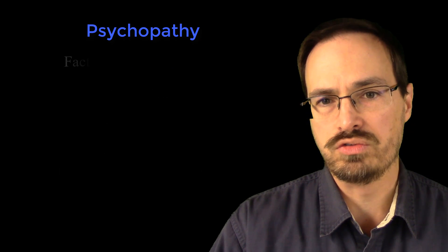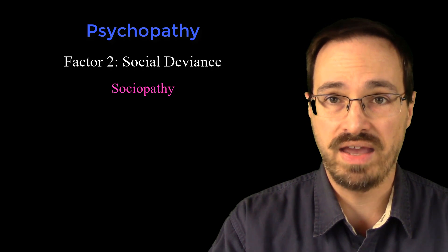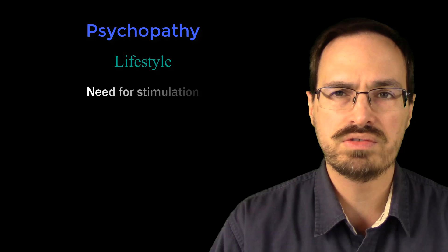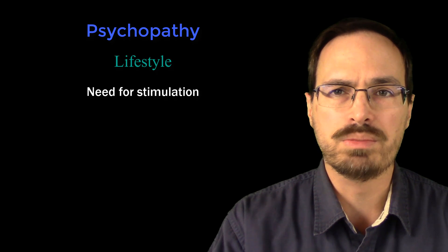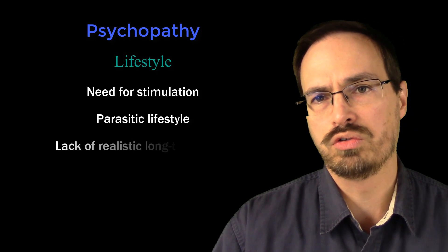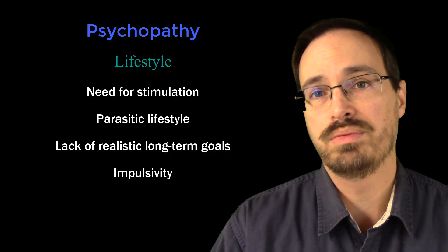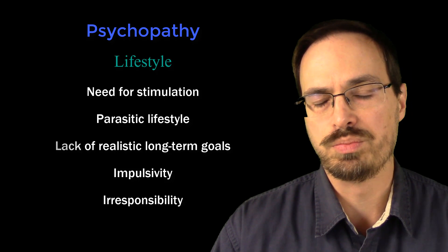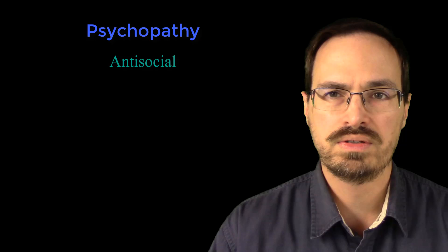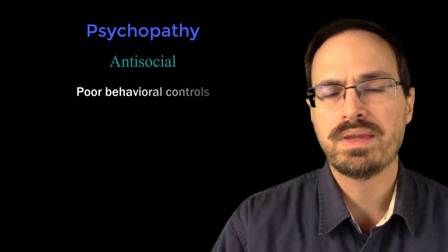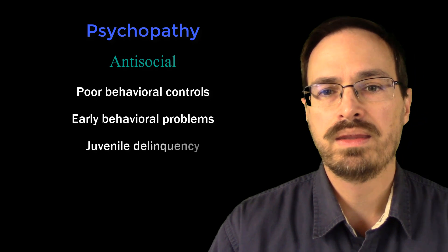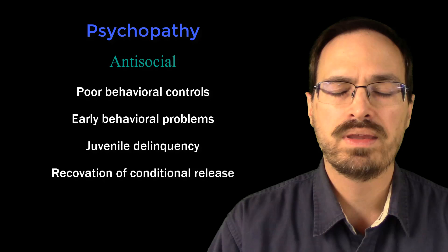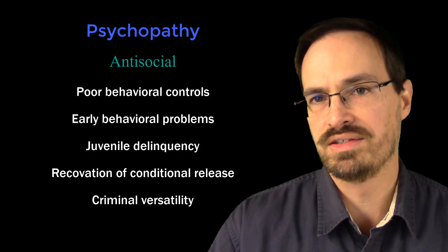Moving to Factor 2 — social deviance — Facet 3 is the lifestyle facet. Here we see a need for stimulation (like we might see with high extroversion), a parasitic lifestyle, a lack of realistic long-term goals, impulsivity (as with antisocial personality disorder and borderline personality disorder), and irresponsibility. Facet 4 is the antisocial facet, and includes poor behavioral controls, early behavioral problems, juvenile delinquency, a revocation of conditional release, and criminal versatility — all of which could be related to antisocial personality disorder.